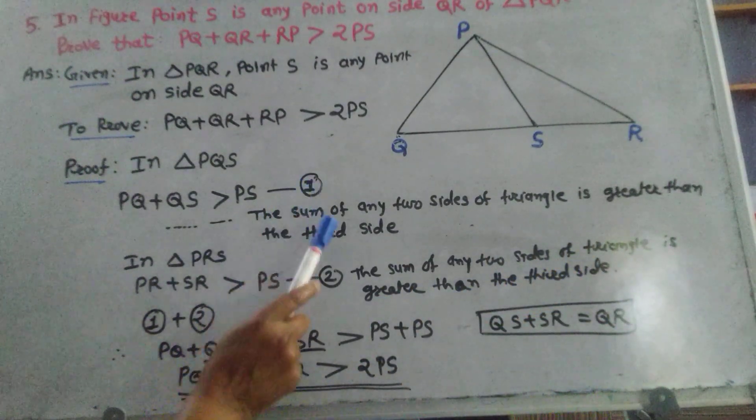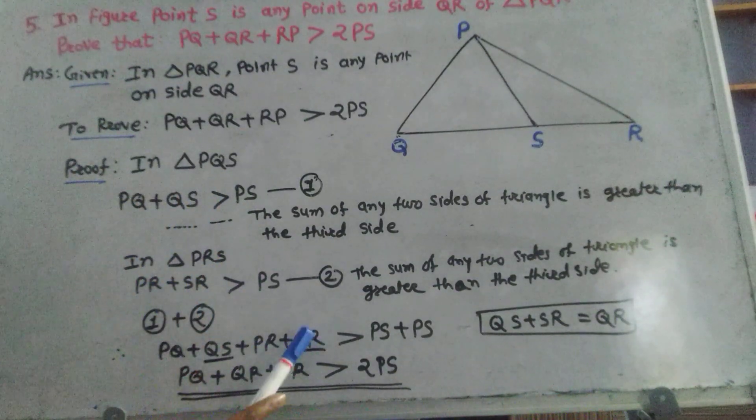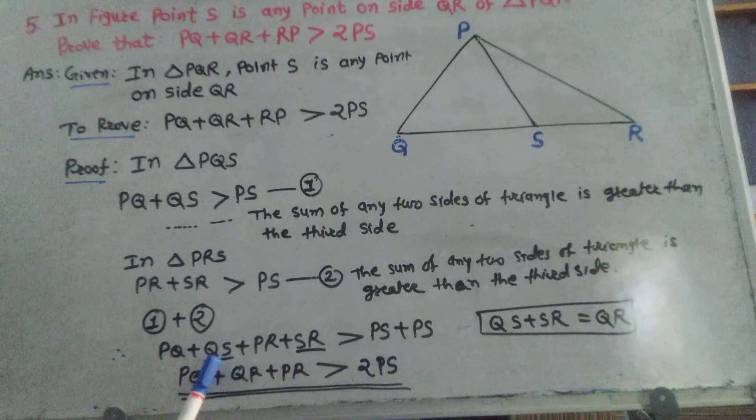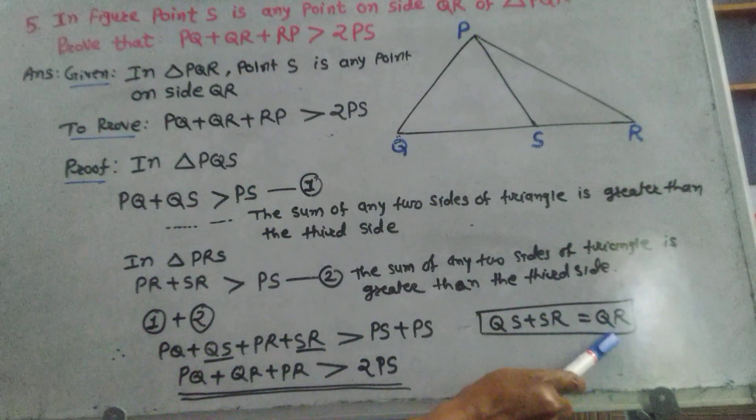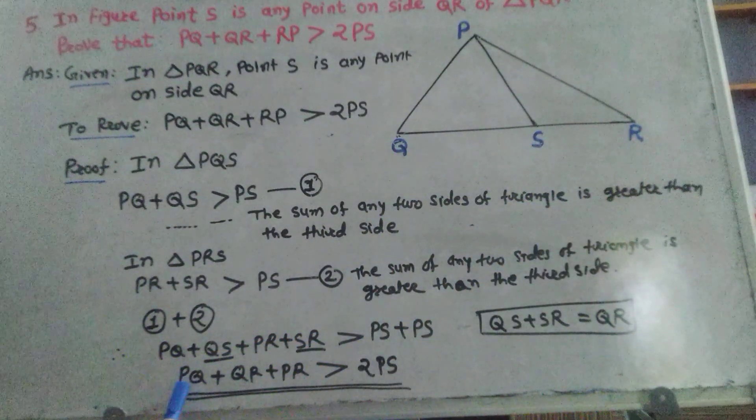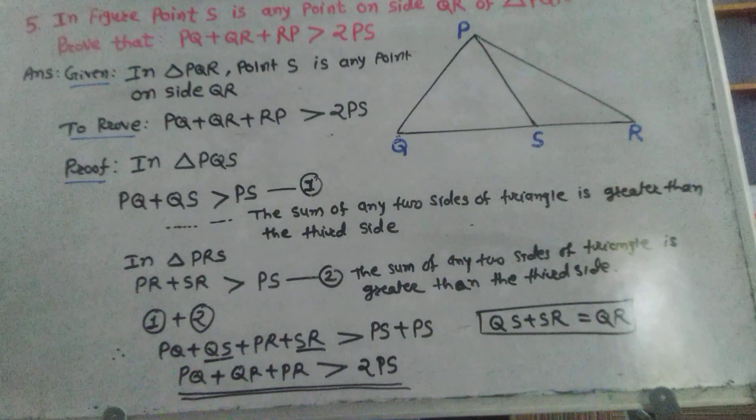Now add equations 1 and 2: PQ plus QS plus PR plus SR is greater than PS plus PS. Since QS plus SR equals QR, therefore PQ plus QR plus PR is greater than 2 times PS.